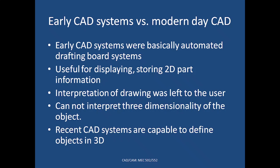In early day CAD systems, they were basically automated drafting board systems. You could generate an engineering drawing with the help of that, but for interpreting that information, you need a person who is qualified to understand and convert it into useful information. These drafting CAD systems were useful for displaying and storing 2D part information, but interpretation of the drawing and the three-dimensionality of the object was left to the user — it is not done by the system.